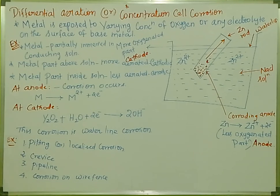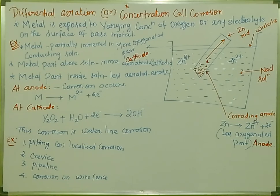If you have less aeration, it leads to corrosion. More aeration also leads to corrosion. This is the key concept of differential aeration or concentration cell corrosion. When a metal in electrolytic solution is exposed to various concentrations of oxygen, this is called differential aeration corrosion.